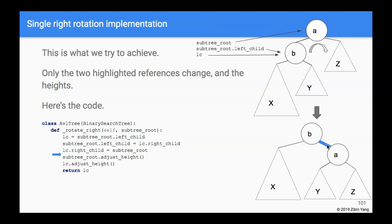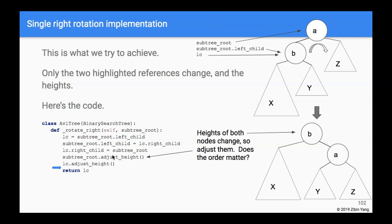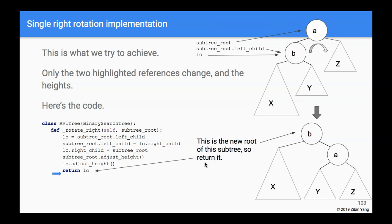Not only do these two references change, but the heights change as well — node B used to be a child of the root and now becomes the parent. So we adjust the height of the old root, and also the height of the old root's left child. A question to think about: can you adjust the left child's height before adjusting the old root's height?